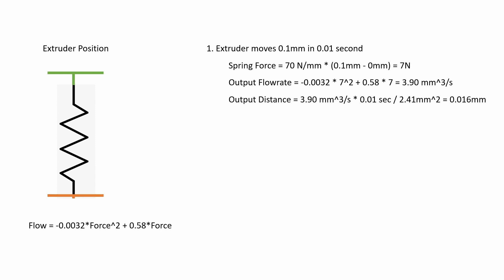So in this case we're going to look at the amount of flow that has happened in this time step. So a flow rate of 3.9 cubic millimeters per second times a time step of 0.01 seconds divided by the cross-sectional area of a 1.75 millimeter piece of filament means that the filament has gone into the melt zone on the hotend by 0.016 millimeters.